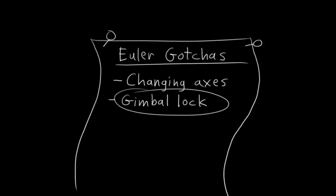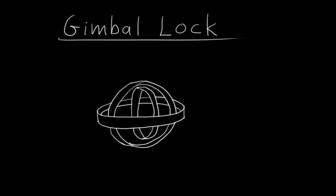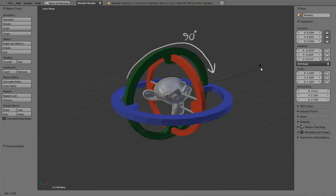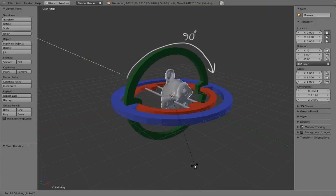What is Gimbal Lock? Gimbal Lock is something that happens in three-axis Euler rotations, where the innermost ring becomes aligned with the outermost ring. This is actually really easy to accomplish.